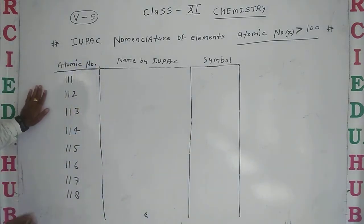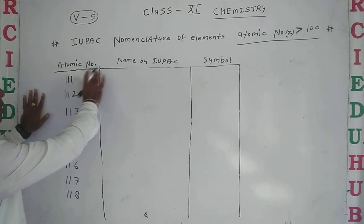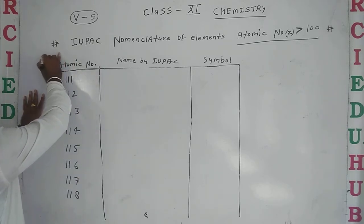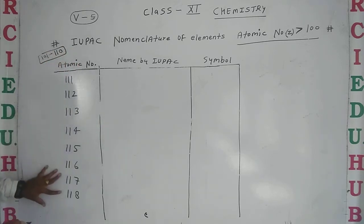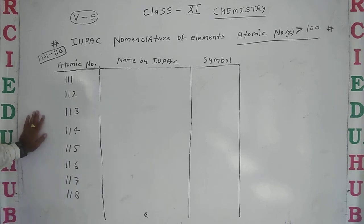We already completed atomic numbers 101 to 110 in a previous video. Now the remaining elements that are discovered today - already 118 elements are discovered in chemistry periodic table.